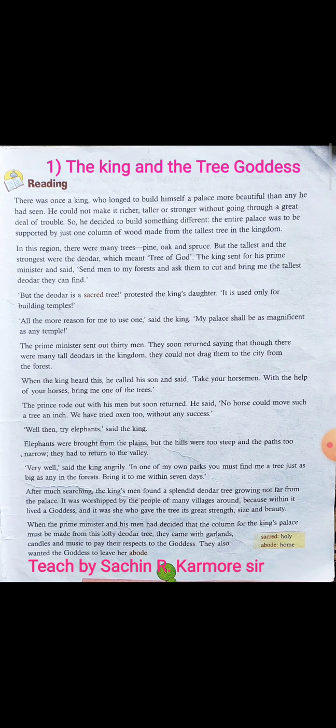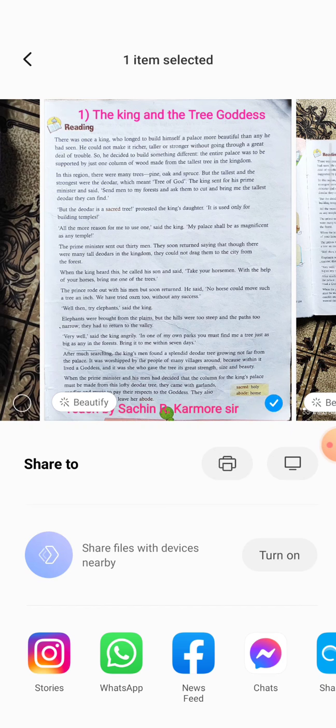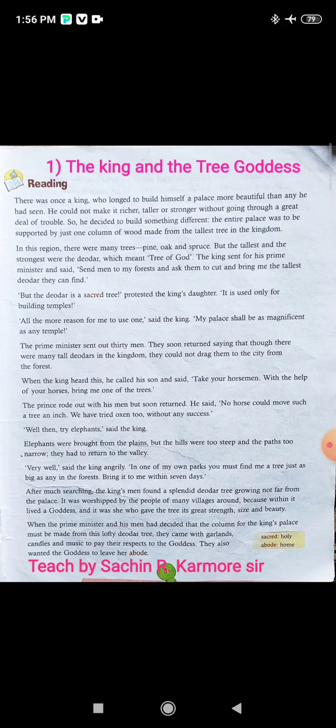Then the king said angrily: 'Well then, try elephants!' Horses and oxen had both failed. So elephants were brought from the plains — 'planes' means flat land, the plains below.